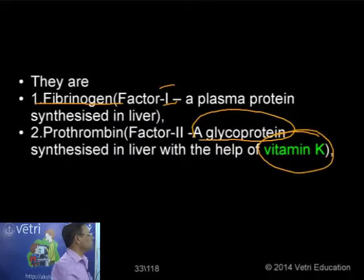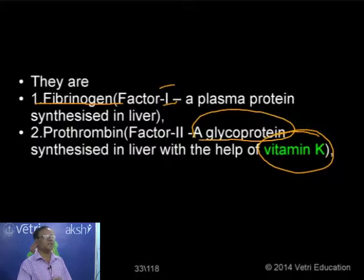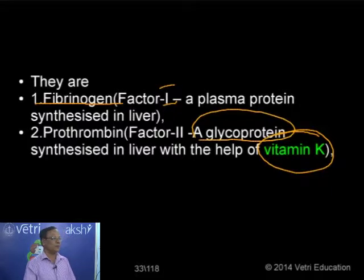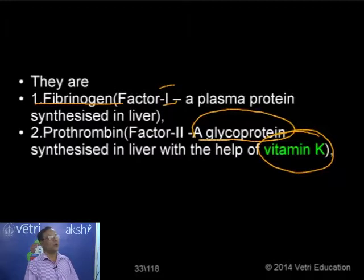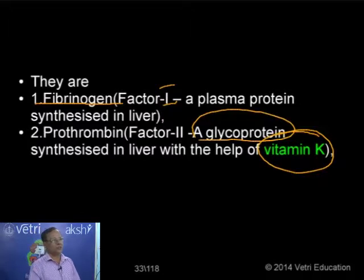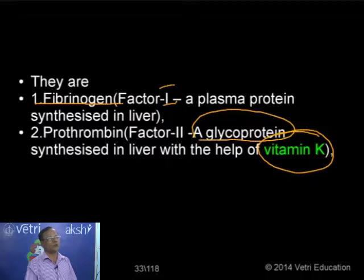For the synthesis of prothrombin, which is later converted to thrombin — acting as an enzyme during clotting — we need vitamin K. Because vitamin K prevents bleeding and promotes the clotting process, it is called the anti-hemorrhagic vitamin. The nickname for vitamin K is anti-hemorrhagic vitamin, essential for clotting and preventing the hemorrhagic process.